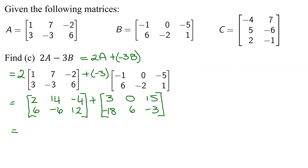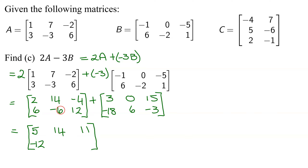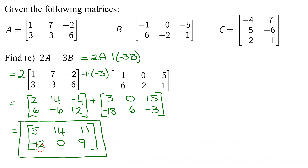Now all I have to do is add these two matrices. When you add matrices, you add corresponding elements: two plus three is five; fourteen plus zero is fourteen; negative four plus fifteen is eleven; six plus negative eighteen is negative twelve; negative six plus six is zero; and twelve plus negative three is positive nine. So remember, when you add and subtract matrices you add or subtract corresponding elements. The answer to 2A minus 3B is this matrix.